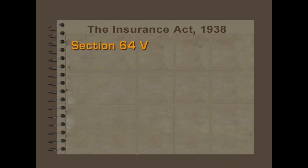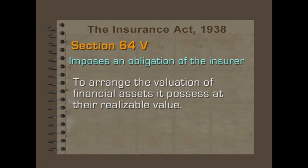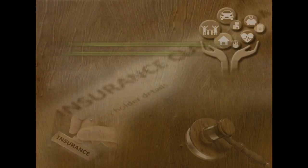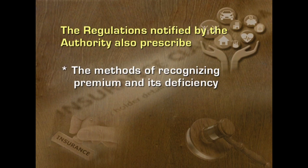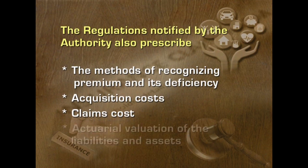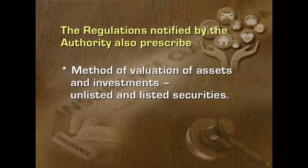Every insurance company shall maintain the solvency margins at every point of time. Section 64B of the Insurance Act 1938 imposes an obligation on the insurer to arrange the valuation of the financial assets it possesses at realizable value. The authority may provide for exclusion of certain assets and also the method of arranging the valuation of assets. The regulations also prescribe the methods of recognizing premium and its deficiency, acquisition costs, claims costs, actuarial valuation of liabilities and assets, method of valuation of assets and investments, unlisted and listed securities. Every insurer shall submit their returns relating to the assets included to calibrate the solvency margins.